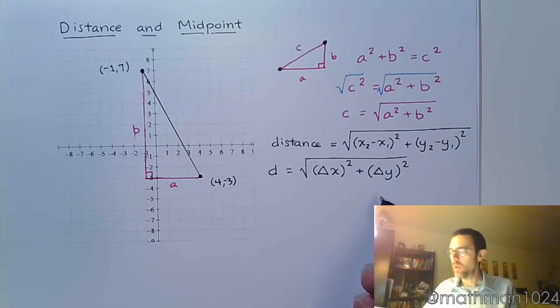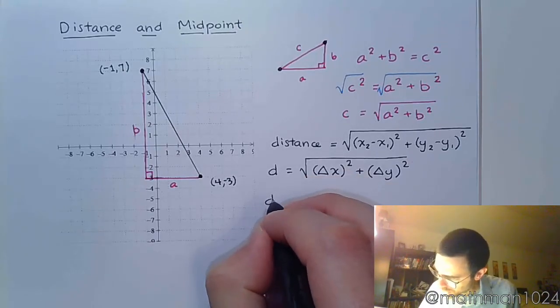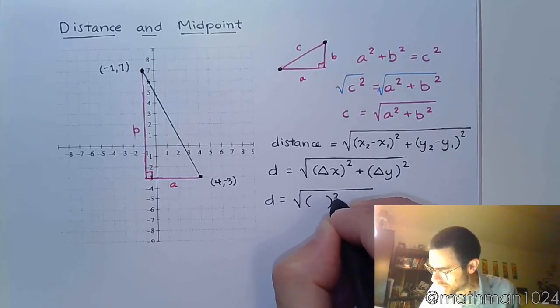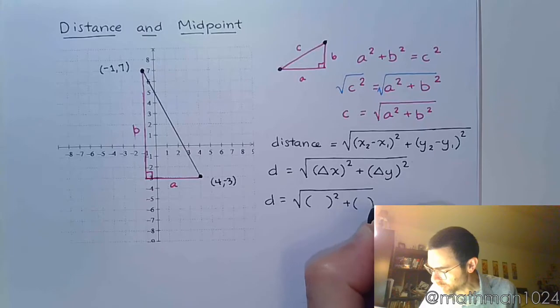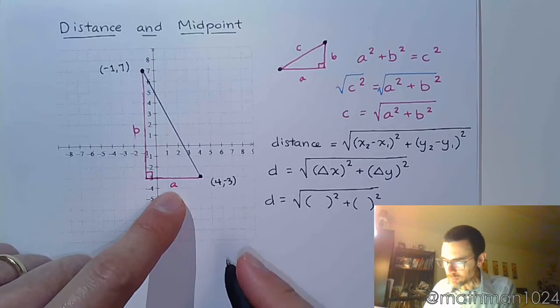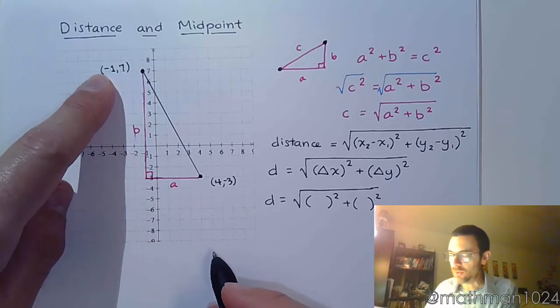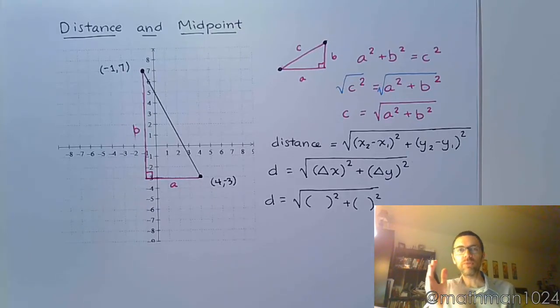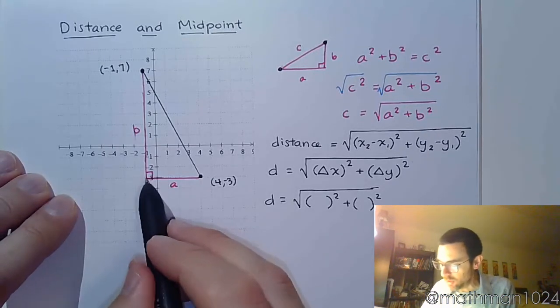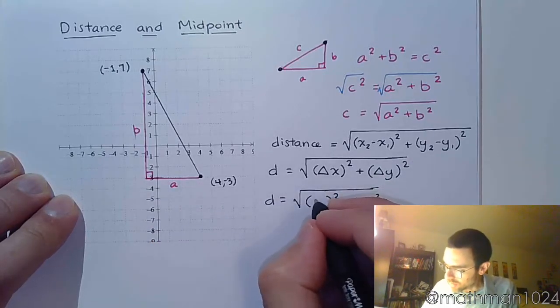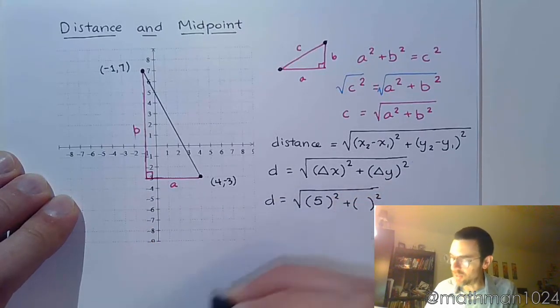So how does that apply here? Well, in this problem, let's find the change in x and the change in y. We're going to square those guys and do some math. Look at your change in x. Your x is going from negative 1 to 4. So if you can think about that on a number line, how far apart is negative 1 from 4? And the answer is 5 units. You've got 1 unit on the left side of 0, 4 on the right side. So that's a difference of 5.